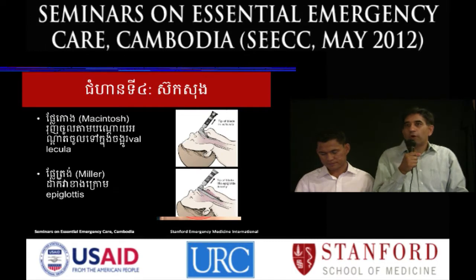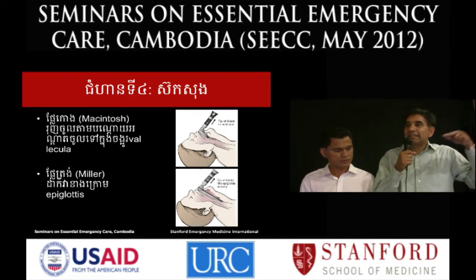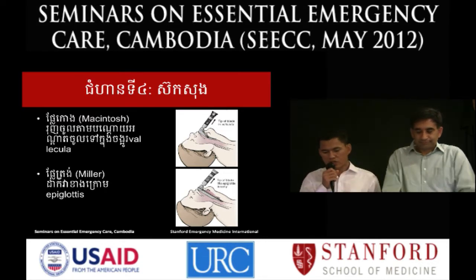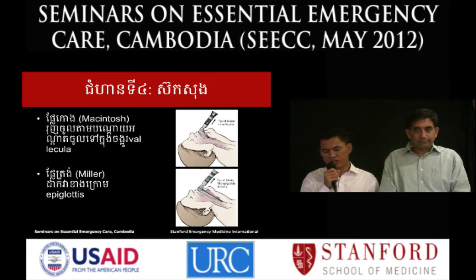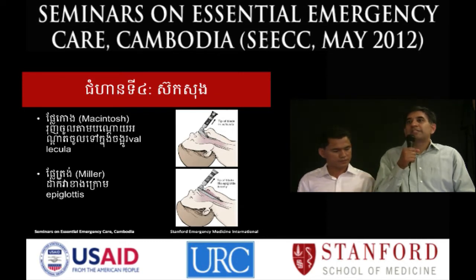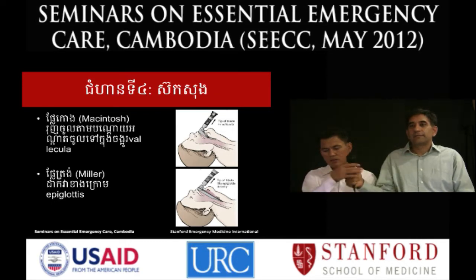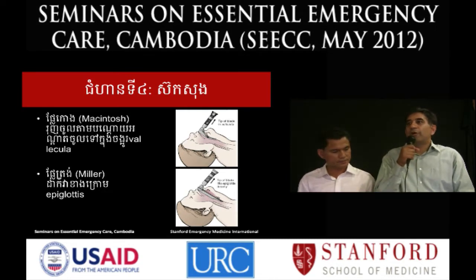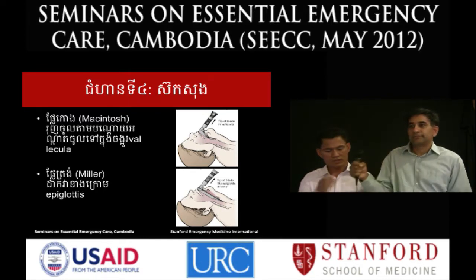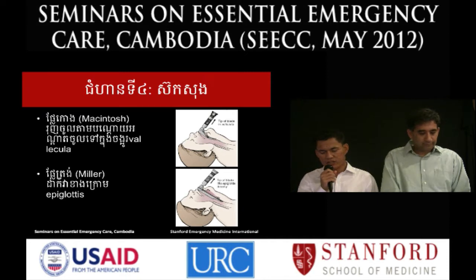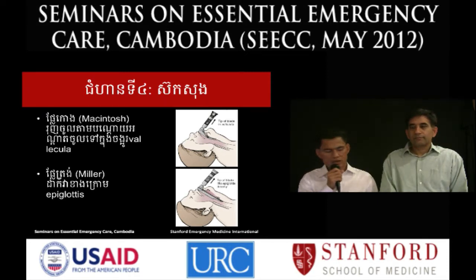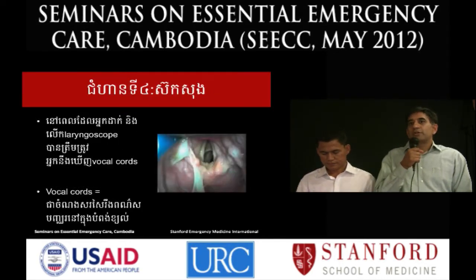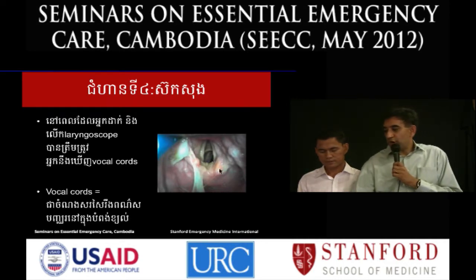The curved blade — the Macintosh blade — slides into the vallecula. The vallecula is a space between the base of the tongue and the epiglottis. The straight blade, or Miller blade, goes underneath the epiglottis. When your laryngoscope is in the proper position and you provide proper traction, you should be able to see the vocal cords, which are these white fibrous bands that the arrow is pointing to.